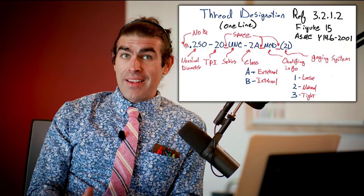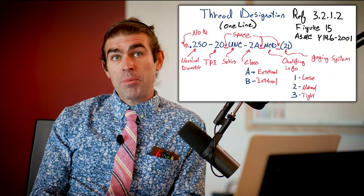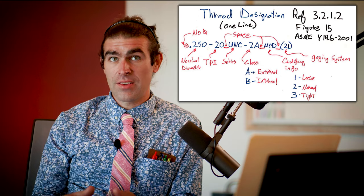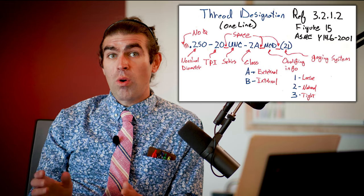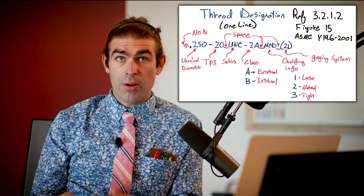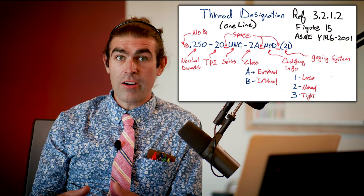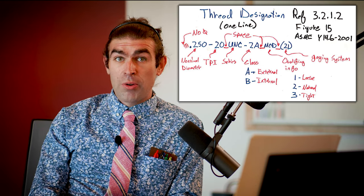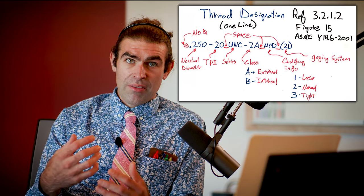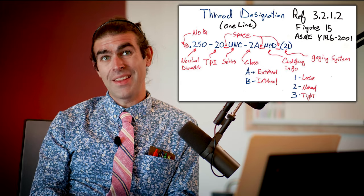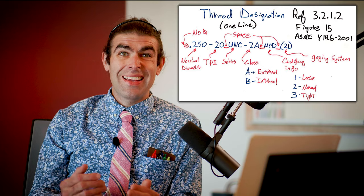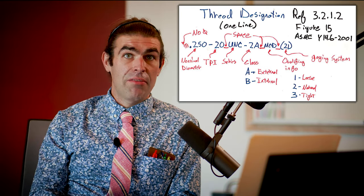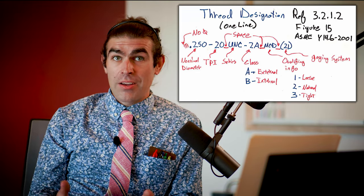Next is the class — a number and a letter, both with meaning. The number is the class of fit: 1 is the loosest fit, 2 is a normal fit, and 3 is the tightest fit with the least clearance. Class 2 is by far the most common. Class 1 is used when you need a lot of clearance, say if you're assembling something underwater with big heavy gloves and you want it to screw together easily even if there's debris. Class 3 is used when you need very little clearance and very little play. The letter A stands for external threads; B stands for internal threads — something you have to memorize and pay attention to, so you can't just copy and paste thread callouts between internal and external threads.